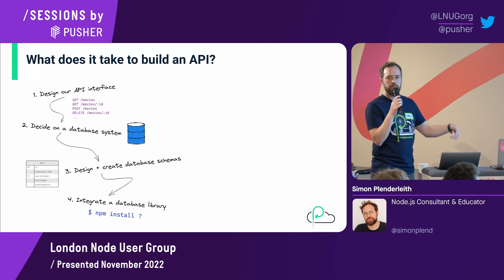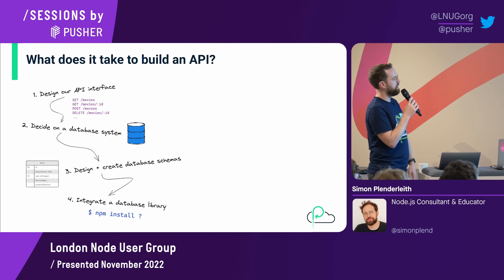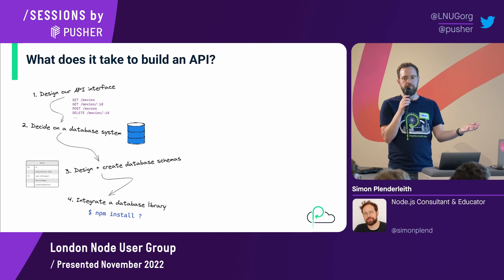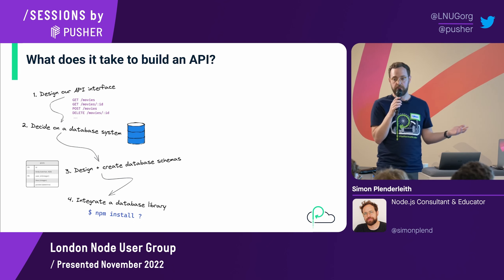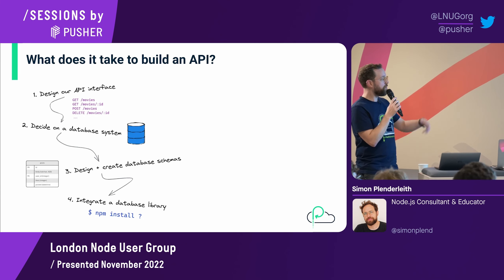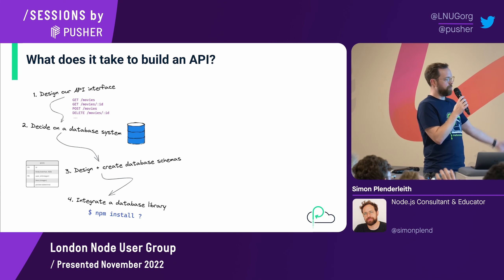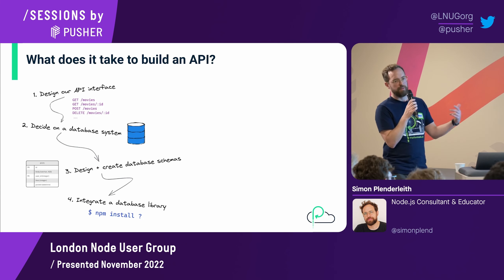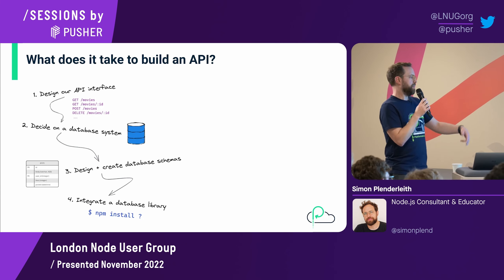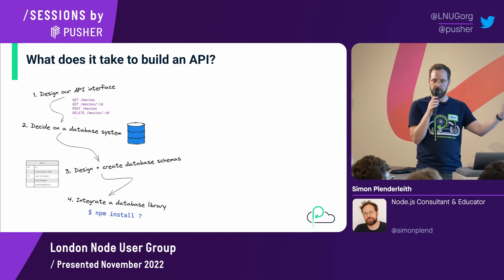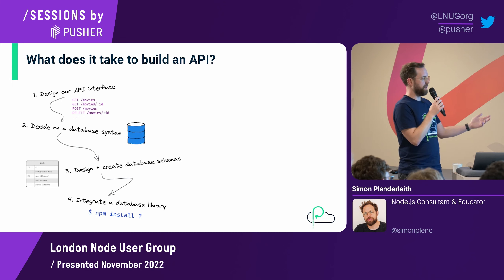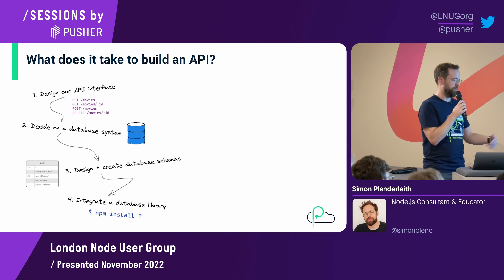We've got to decide on a database system — are we going to use Mongo, MySQL, or Postgres? There's a lot of different things to think about. Then we actually have to design and create our database schemas, figure out the tables, the fields, and the relationships between them. Then we'll probably need to integrate a database library — do we want an ORM, a query builder, or something more raw with native drivers? An NPM install is just the tip of that iceberg because we've then got to integrate it into our application, configure it, and figure out things like connection pooling.